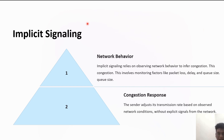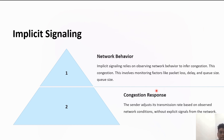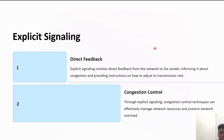The choke packet adjusts the transmission rate to reduce congestion and improve the network's overall performance. Implicit signaling involves no communication between the congested node and the source. The source guesses there is congestion when it does not receive any acknowledgement. On sensing this congestion, the source slows down its process. This is particularly used in the case of TCP, and it works based on network behavior and congestion response.